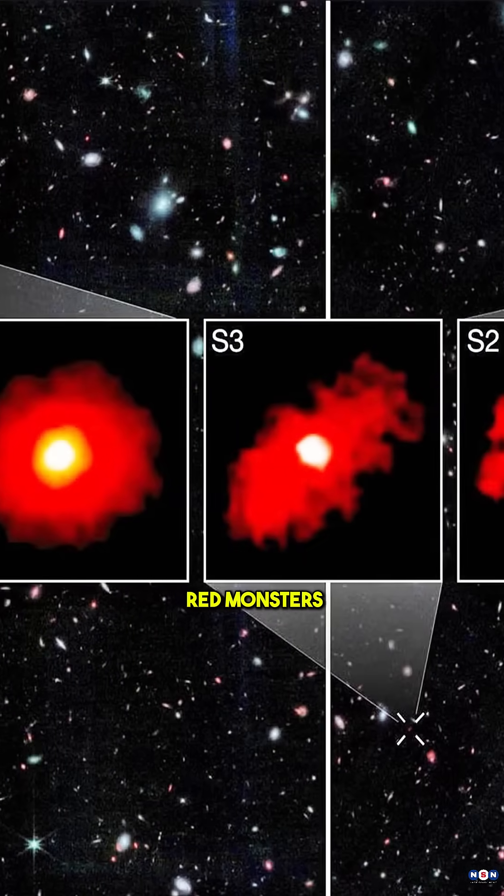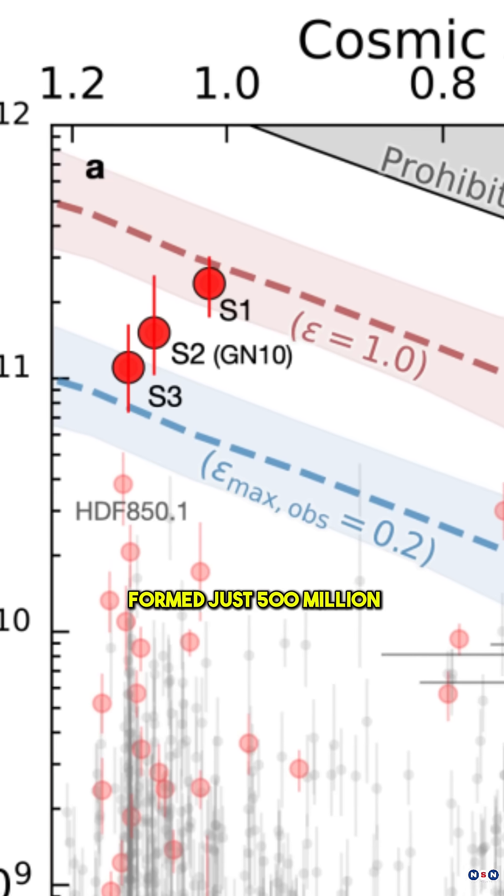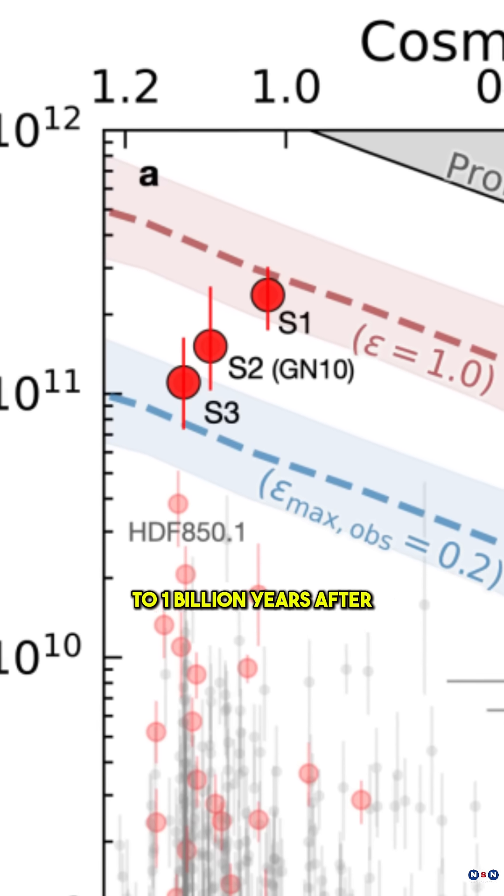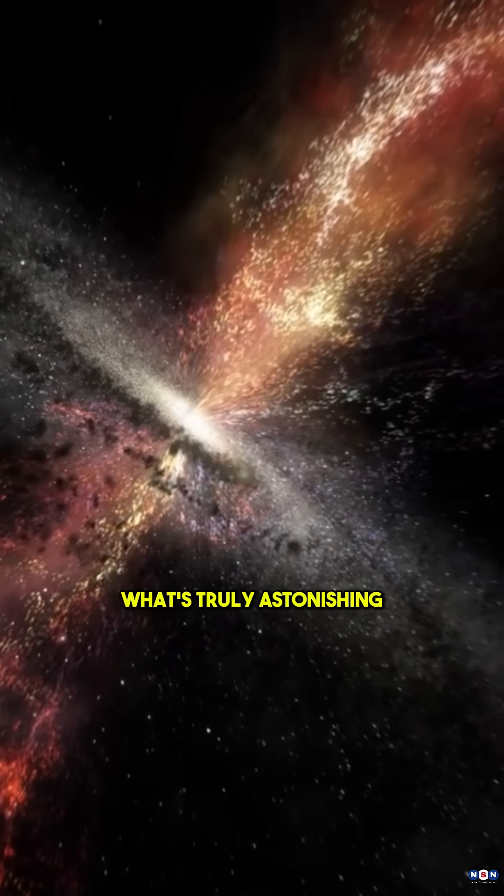Nicknamed the Red Monsters, these ancient galaxies formed just 500 million to 1 billion years after the Big Bang, yet each one rivals the Milky Way in mass. What's truly astonishing?